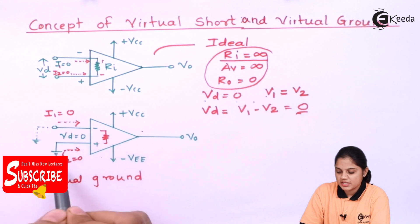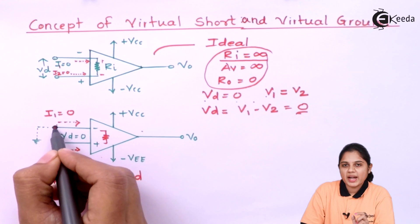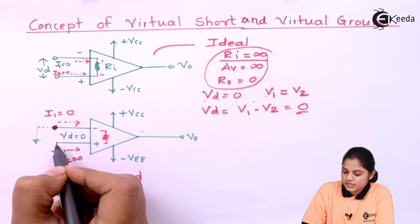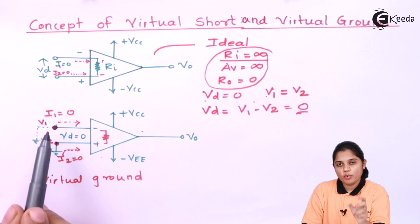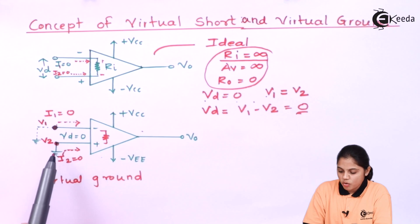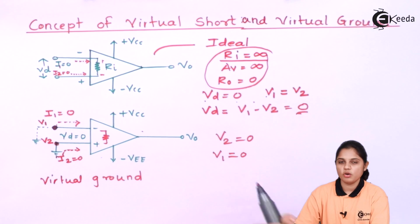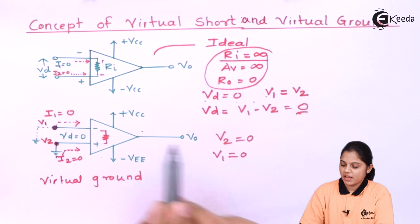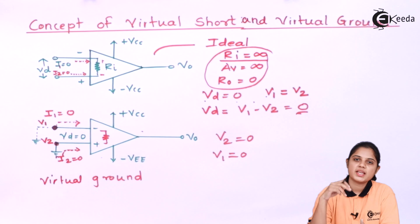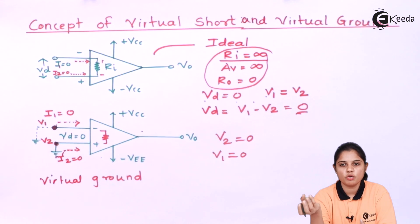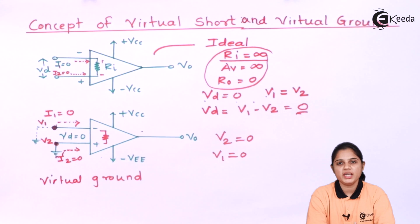Due to zero current, there will be no voltage across the resistance, so this terminal will come to the same potential level as the other terminal. V1 will take the same potential as V2, and since V2 is grounded, V2 is zero. Therefore V1 will also become zero. This is the virtual ground concept — if one terminal is grounded, the second also takes the same potential, which is zero.